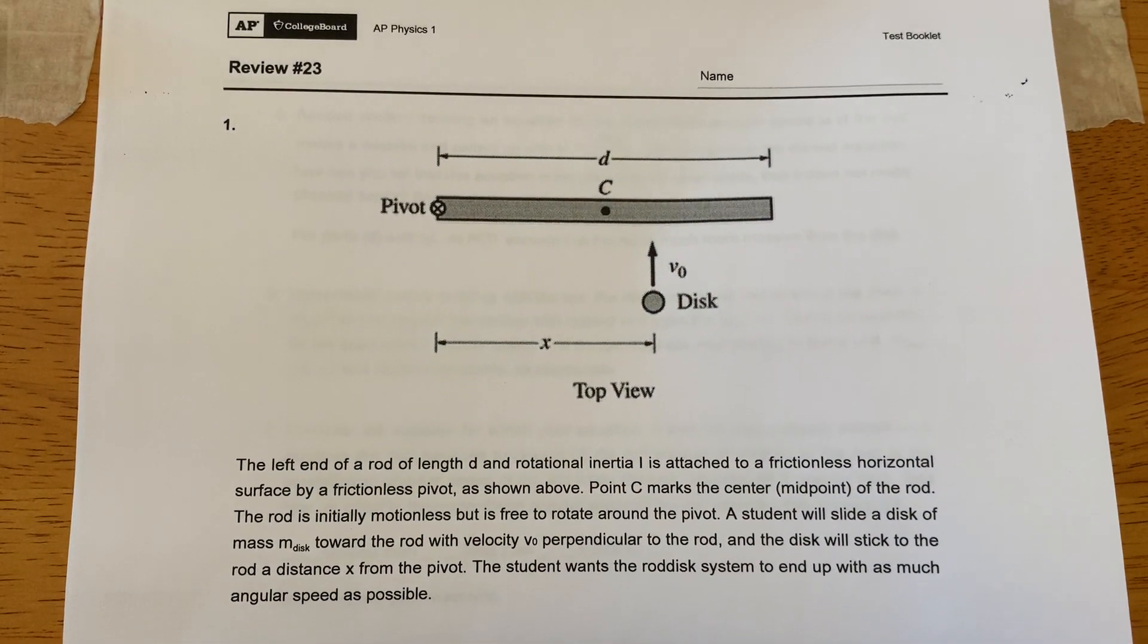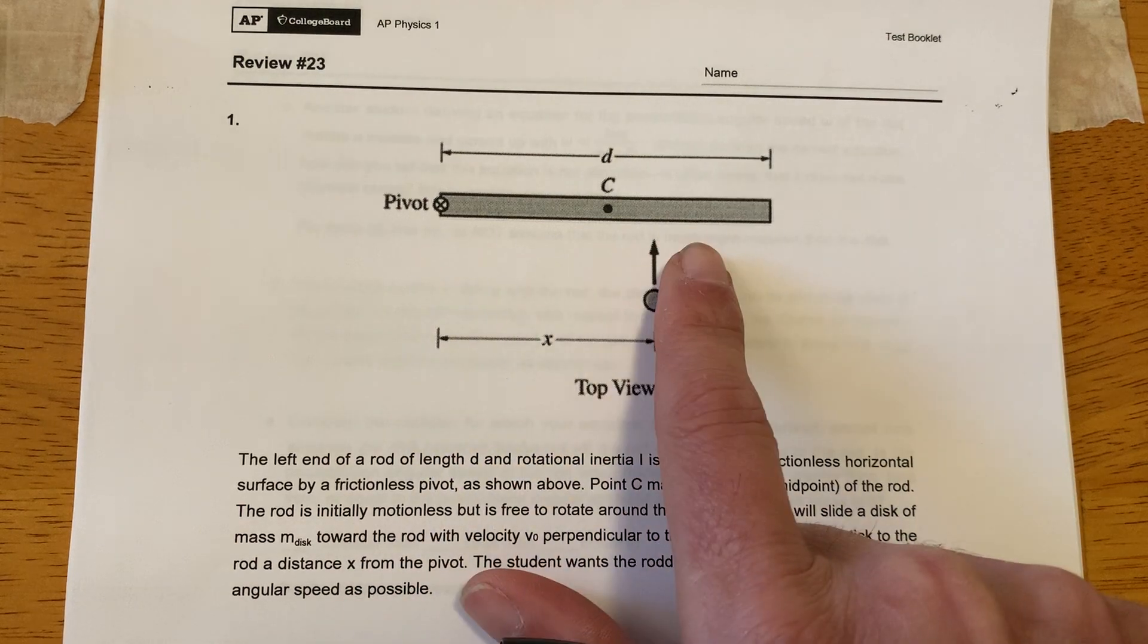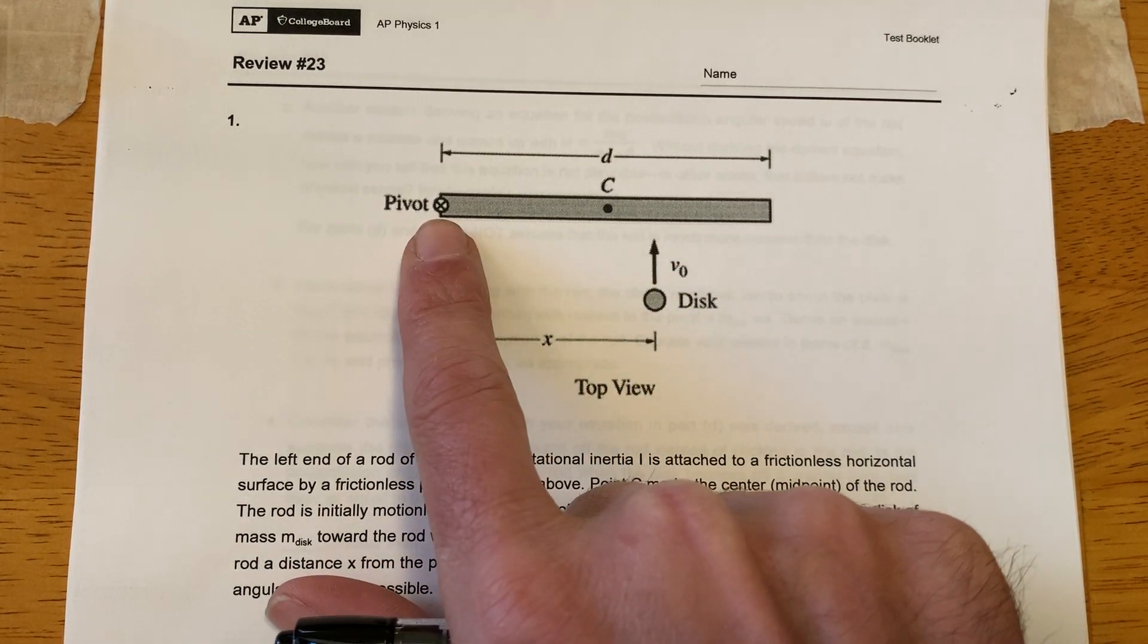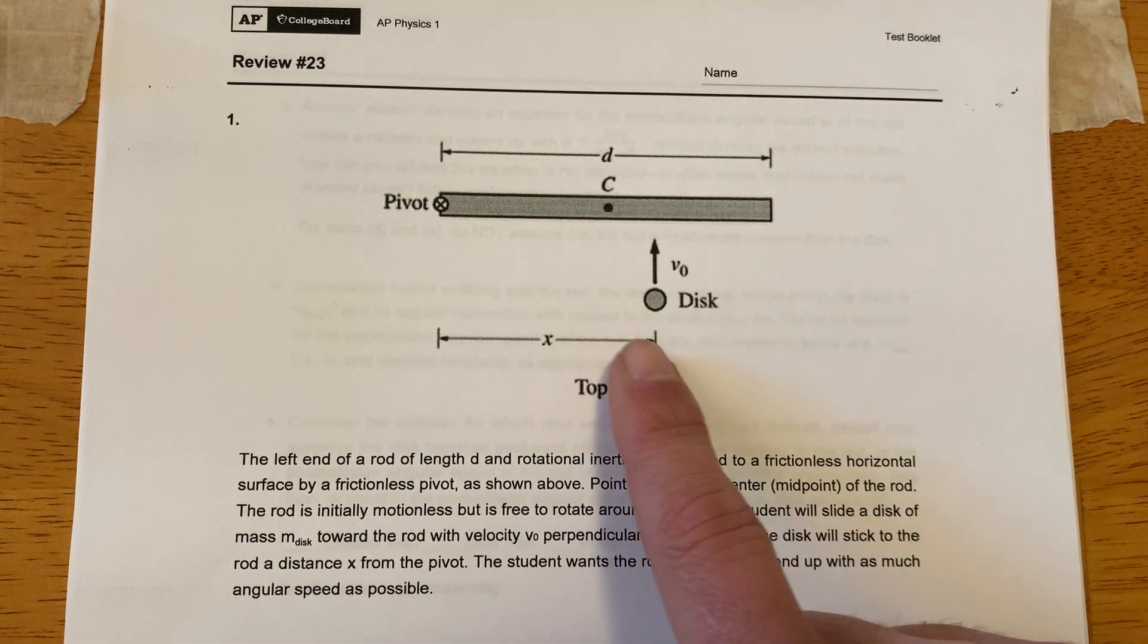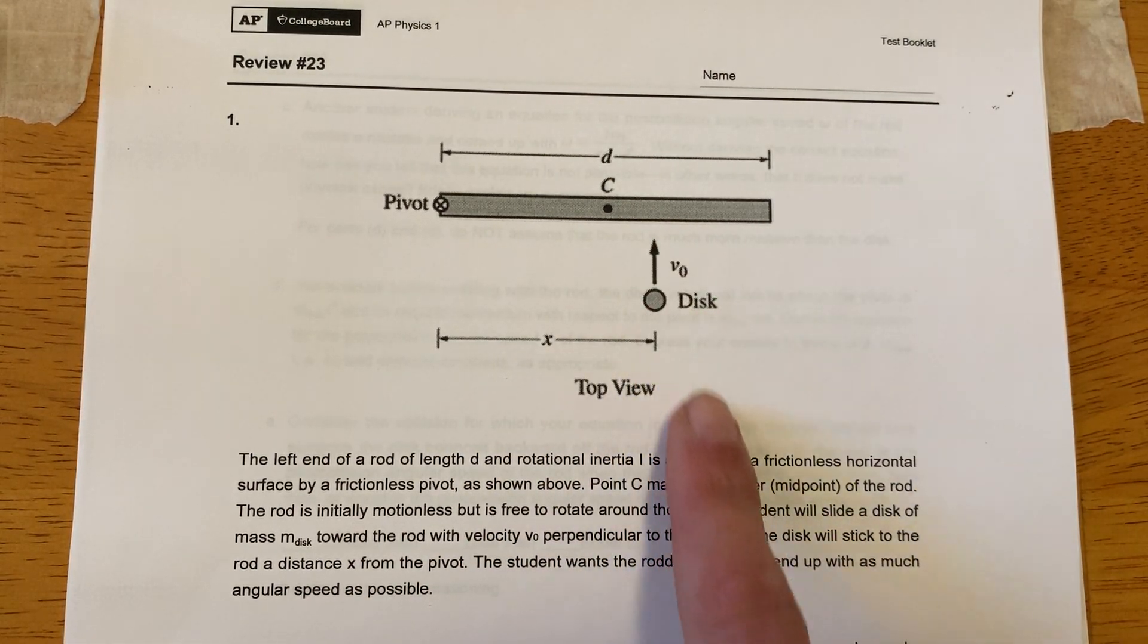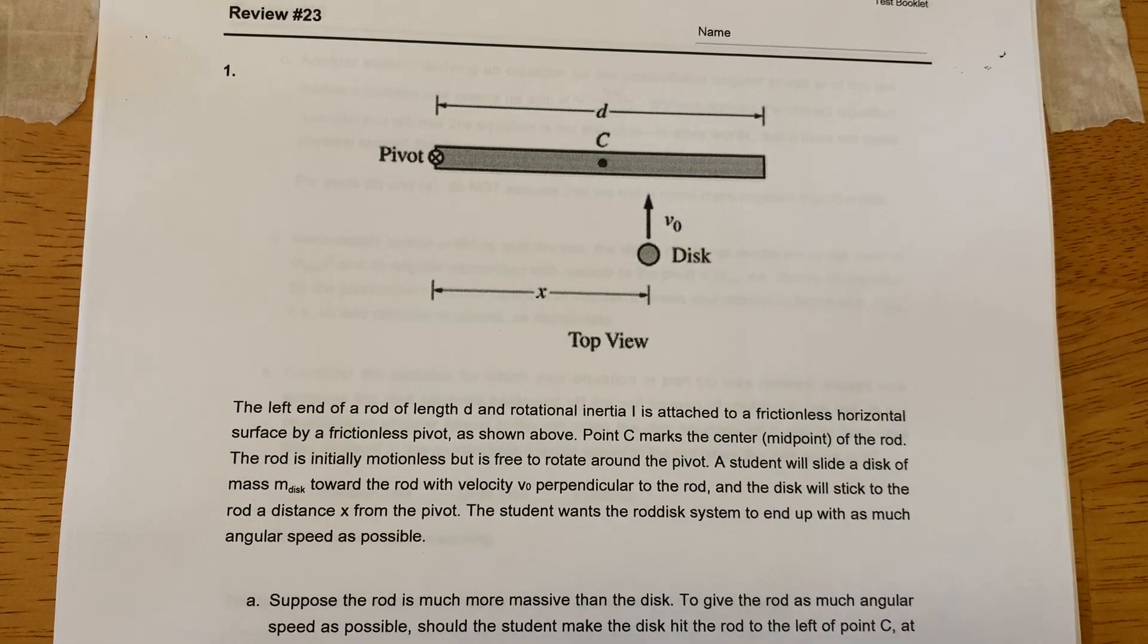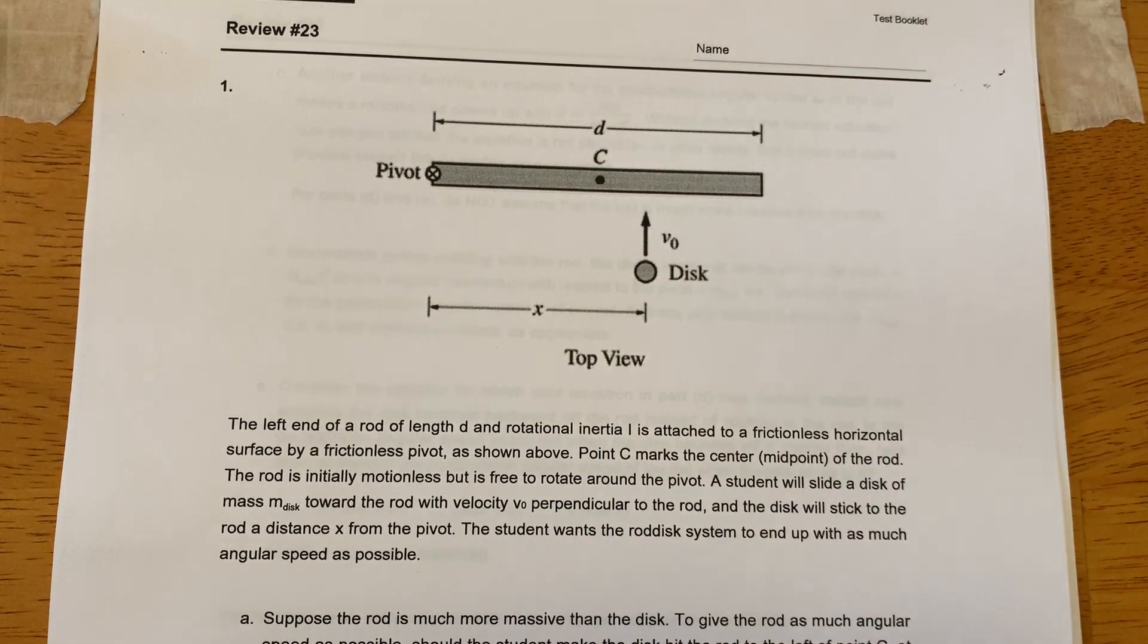Hey guys, Reeves here. Review 23. Let's take a look. So review 23. Have a rod, frictionless surface, frictionless pivot point, et cetera. Connects at rest and then get some disc coming this way and it's gonna hit this rod and stick. So we're gonna hit this rod and stick.